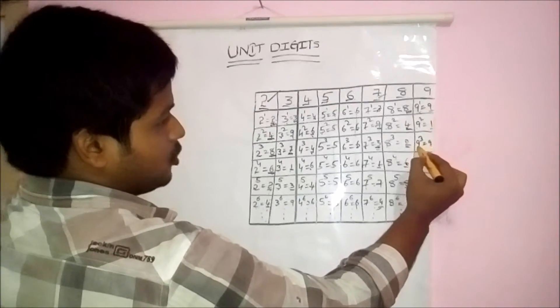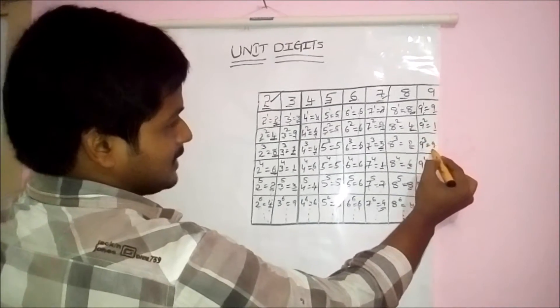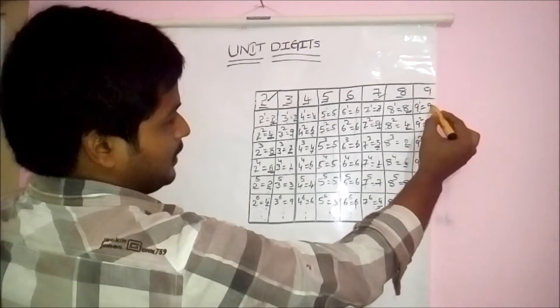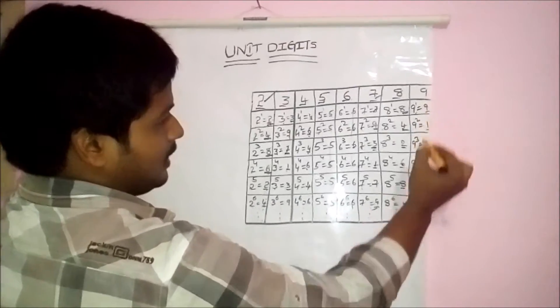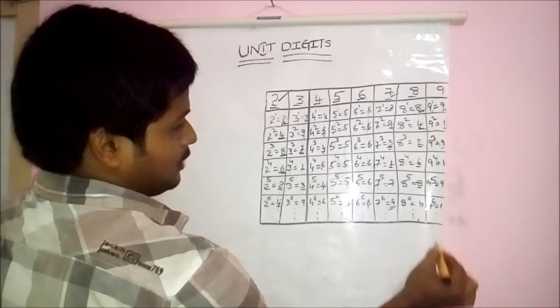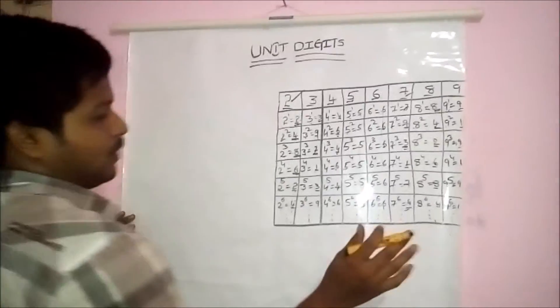For 9: 9 power 1 unit digit is 9, 9 squared unit digit is 1, 9 cubed unit digit is 9. It repeats: 9, 1, 9, 1, 9, 1 and so on.